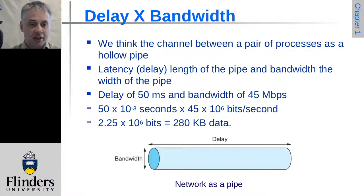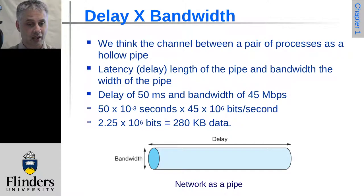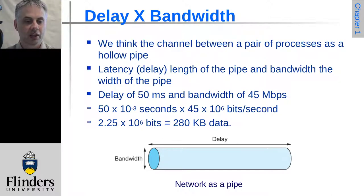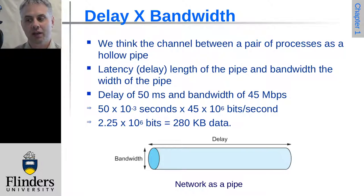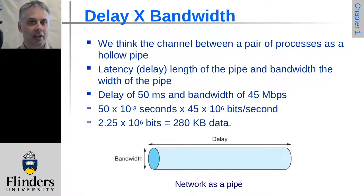For example, with a propagation delay of 50 milliseconds end-to-end and a bandwidth of 45 megabits per second, we multiply those two values — one in seconds, the other in bits per second, so the units cancel — giving us 2.5 × 10⁶ bits, or about 280 kilobytes of data in transit at any point on that link. For a fiber optic cable going around Australia, with a propagation delay of around 100 milliseconds and carrying tens of gigabits per second, the delay-bandwidth product would be much, much higher.